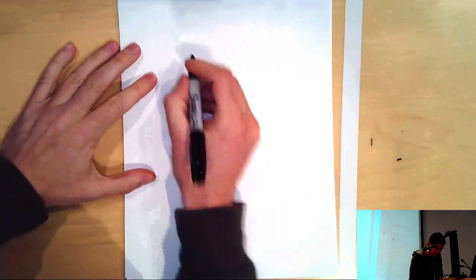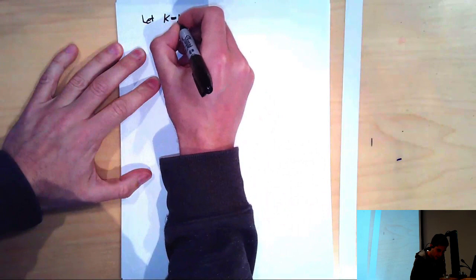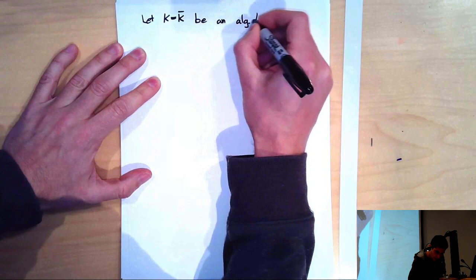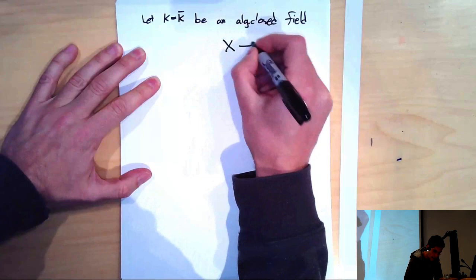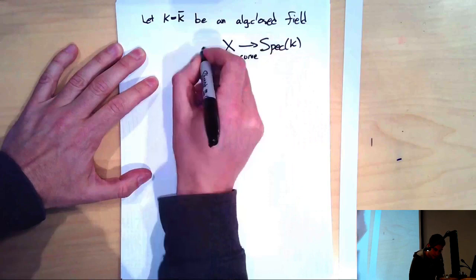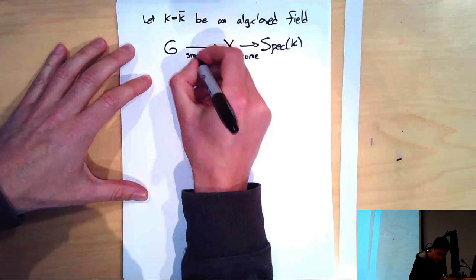Let me begin by reviewing where we got to last time. Let me describe the setup. Let K be an algebraically closed field. X is going to be an algebraic curve defined over K. And G is going to be a group scheme over X, which is smooth, affine with connected fibers.